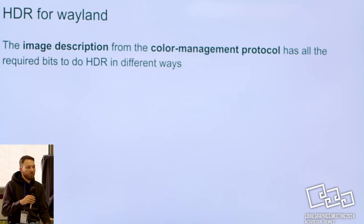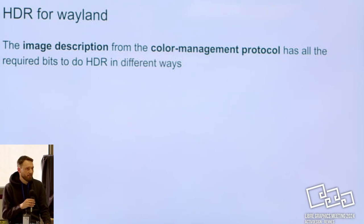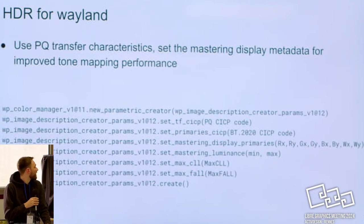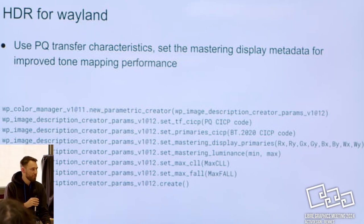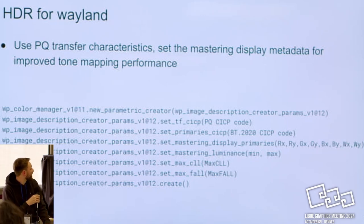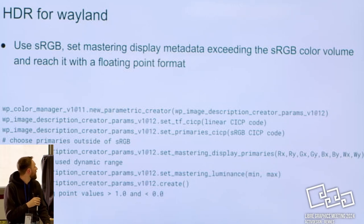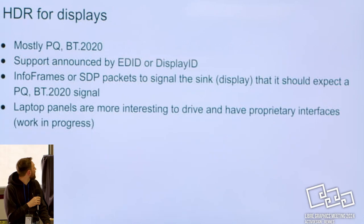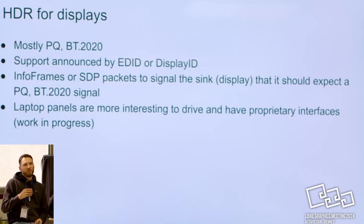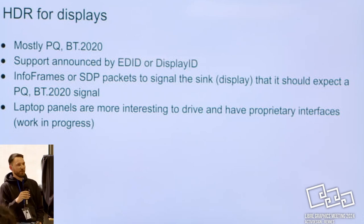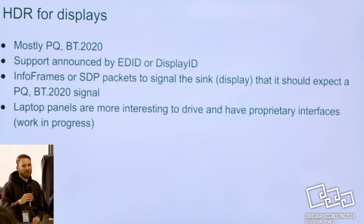With the image descriptions you can create in Wayland, we can now completely describe everything — even all the HDR bits that are necessary — and that allows the compositor to handle everything that needs to be handled. I'll skip the code examples here, but if you're interested, this is how you would use everything — how you would create a specific image description for HDR for PQ and also for sRGB.